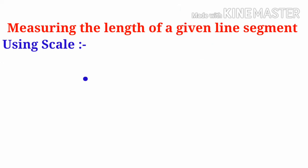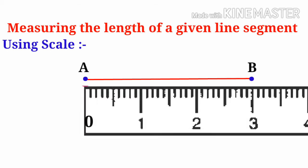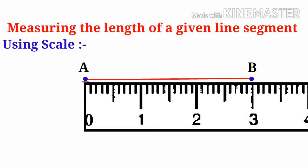Now let us find out the length. Take two points A and B and draw a line through it. Now take the scale and find the length of this line segment. We should put 0 at point A and at point B there is 3. So 3 minus 0 is equal to 3. The length of line segment AB is 3 centimeters.